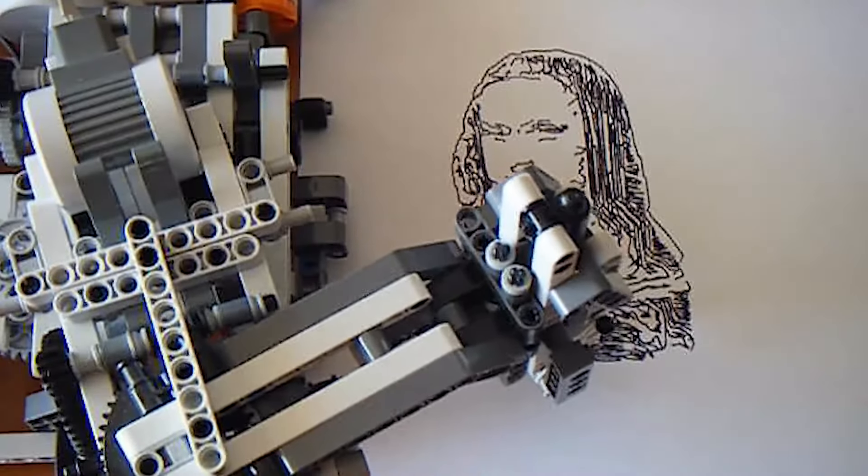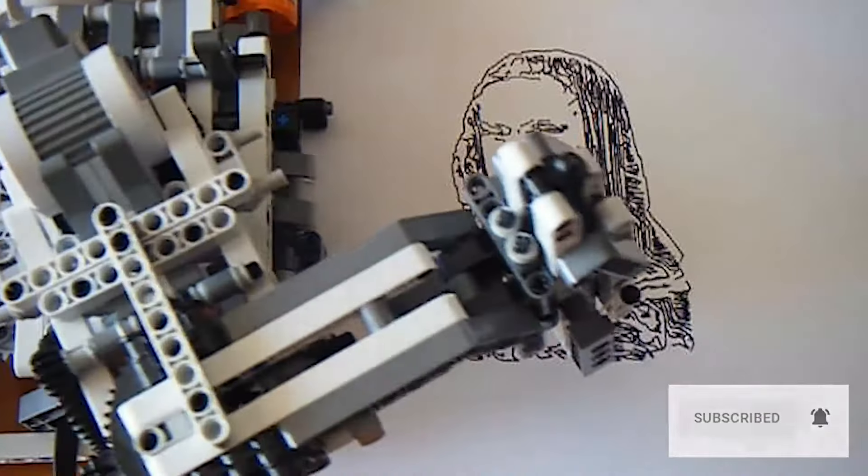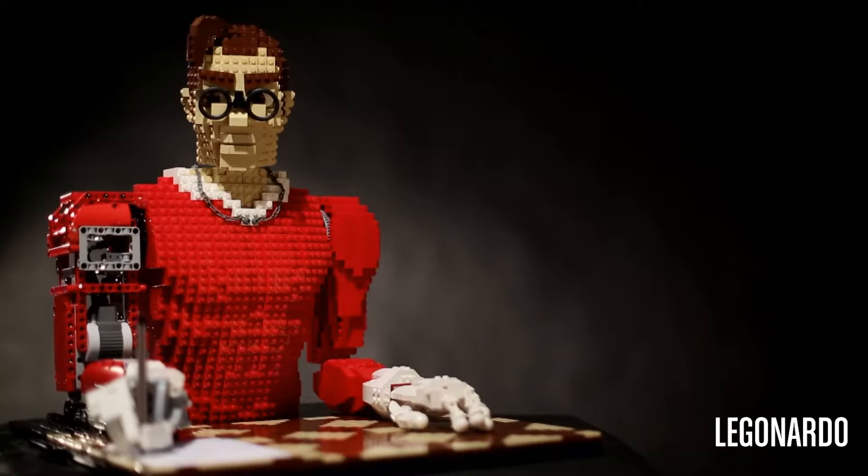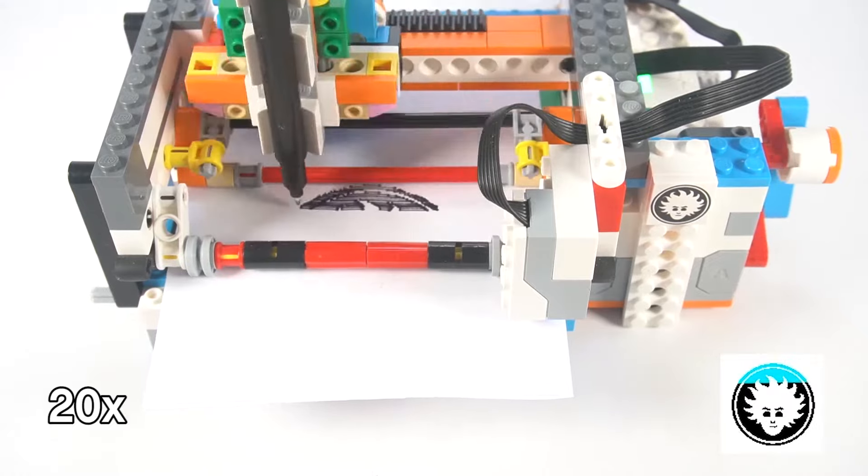To better understand this process I had to build some drawing machines on my own. I started with robots, like this Skara robot arm, my portrayer robot Legonardo, and other Cartesian plotters. Then I got rid of motors, microcontrollers and software.